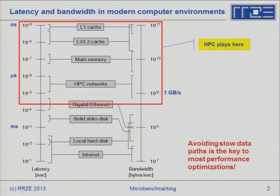Avoiding slow data paths is the key to most performance optimizations. Whatever you do, if you can make sure slow data paths are avoided, you do something good for the performance of your code. How much it will improve depends — we will try to tell you how to estimate that. But avoiding slow data paths is the key optimization.